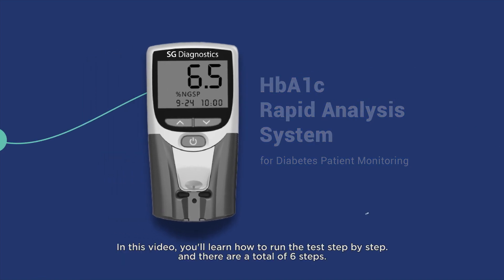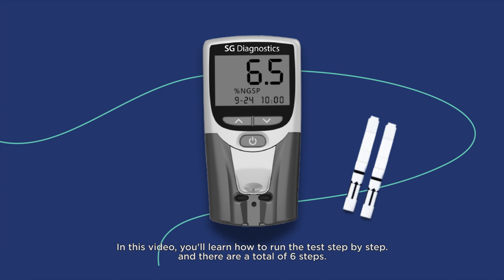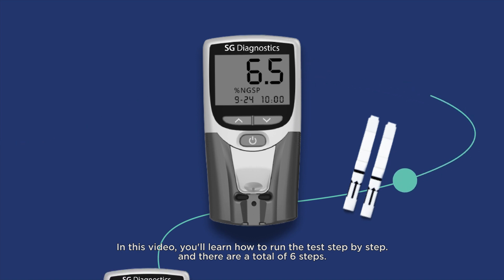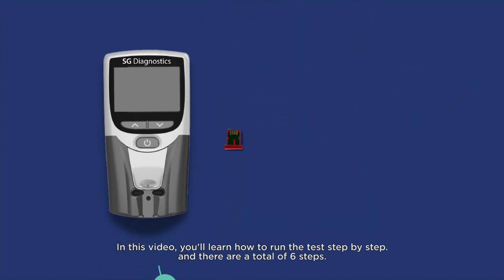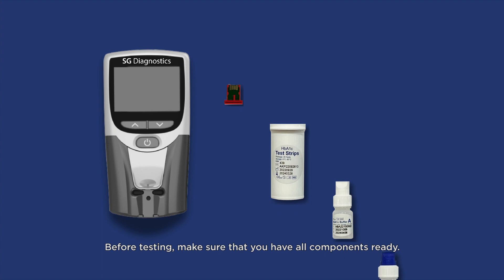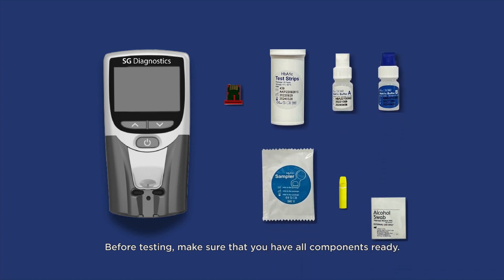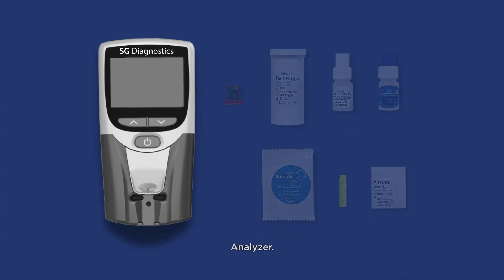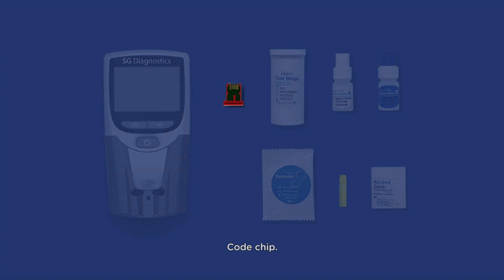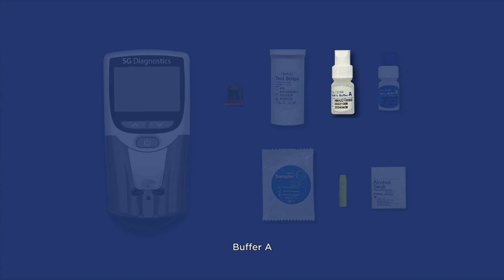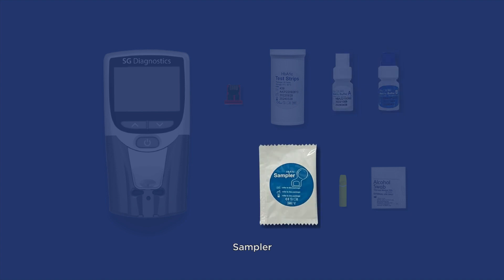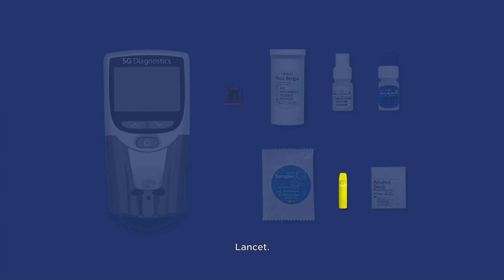In this video, you'll learn how to run the test step by step, and there are a total of six steps. Before testing, make sure that you have all components ready: Analyzer, Code chip, Test strips, Buffer A, Buffer B, Sampler, Lancet, and Alcohol Swab.